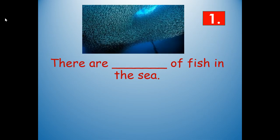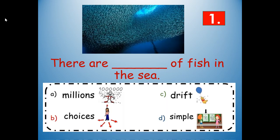Number one: there are blank of fish in the sea. Would it be: there are millions of fish in the sea, there are choices of fish in the sea, there are drift of fish in the sea, or there are simple of fish in the sea? What makes the most sense given our picture clues and the context? Write millions — M-I-L-L-I-O-N-S. There are millions of fish in the sea.